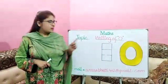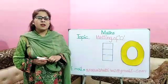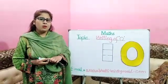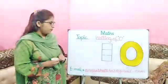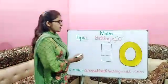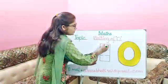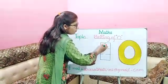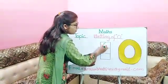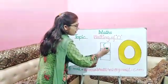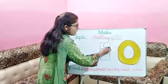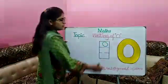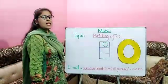Look at the board carefully. I will start writing the number 0 on the board. Firstly, start at the top. Curve around. No straight lines. And go all the way around. This is 0.